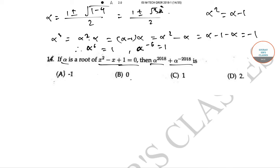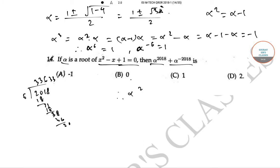Now let us check whether 2018 is exactly divisible by 6. Dividing 2018 by 6 gives a remainder of 2, so 2016 is exactly divisible by 6. Therefore α^2016 = (α^6)^336 = 1^336 = 1.